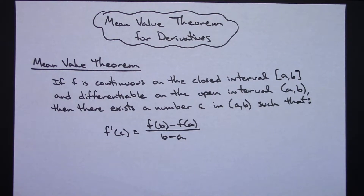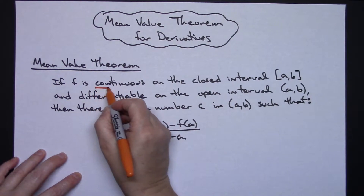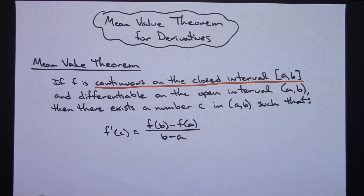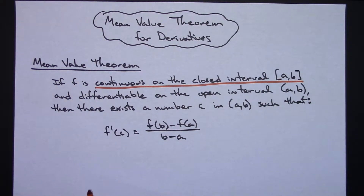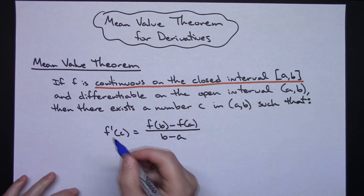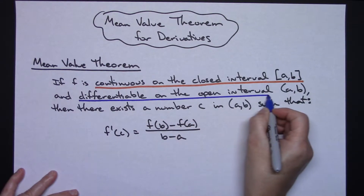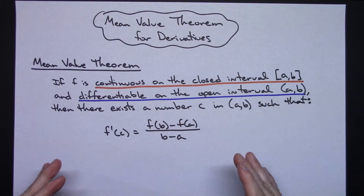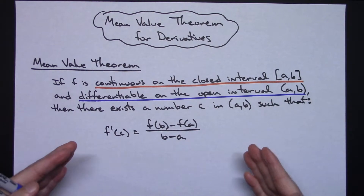To verify whether or not the theorem holds, there are a couple things that you have to check. Where it says if it's continuous on the closed interval — you've got to take a look at your function and decide whether or not it's continuous on that closed interval. Then you also have to check to see if it's differentiable on the open interval. If those two things are true, then you know that the mean value theorem holds.